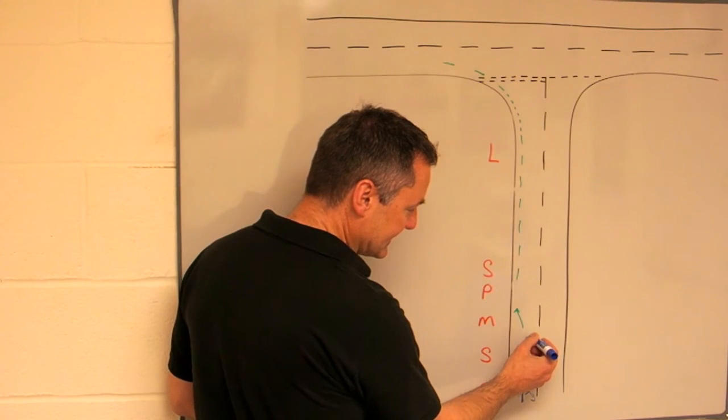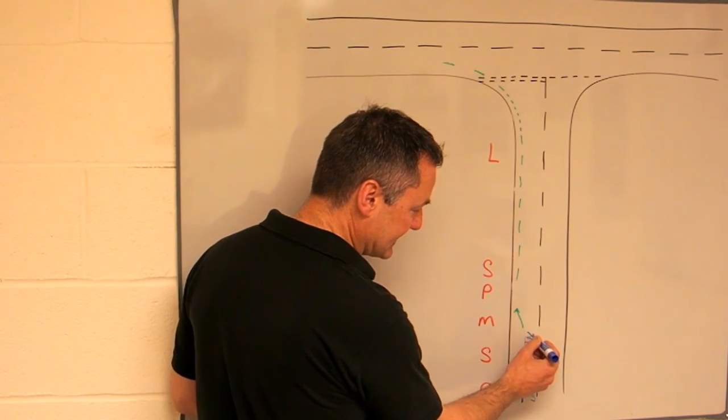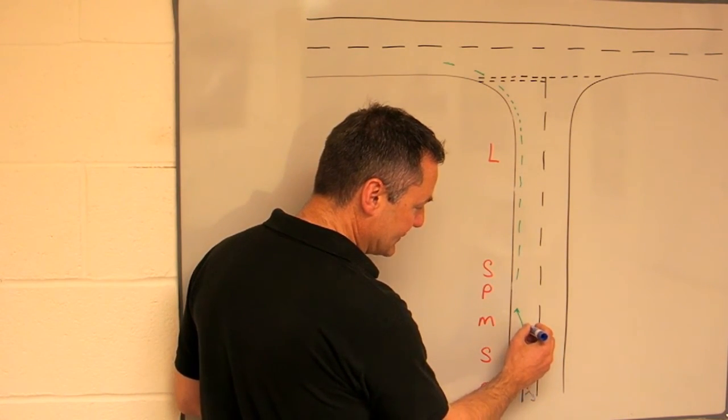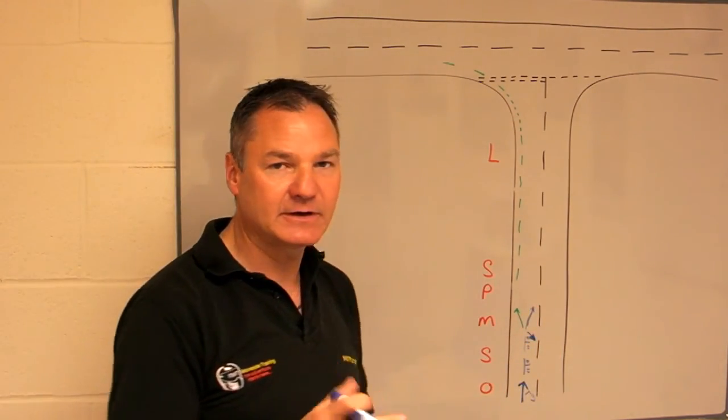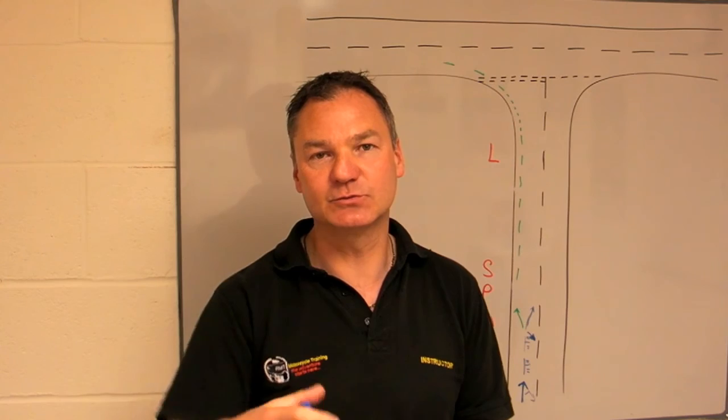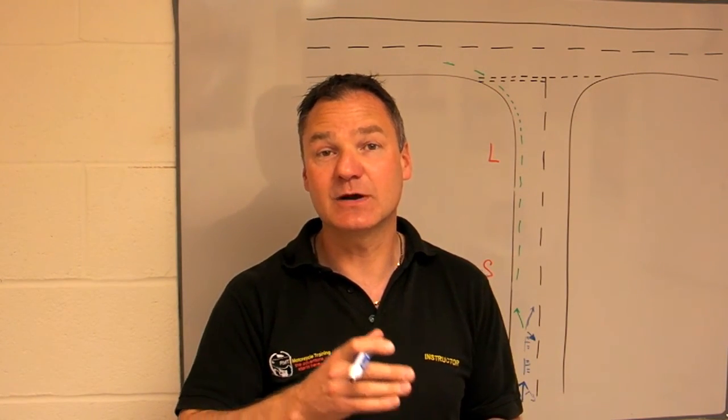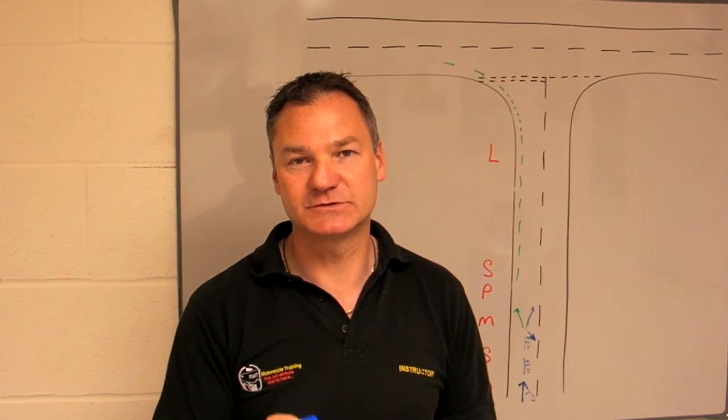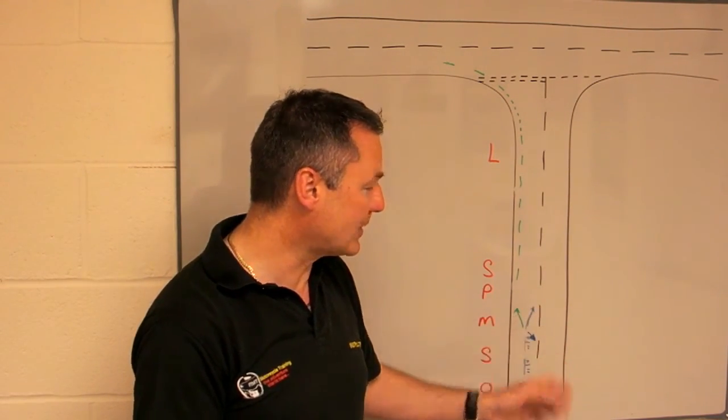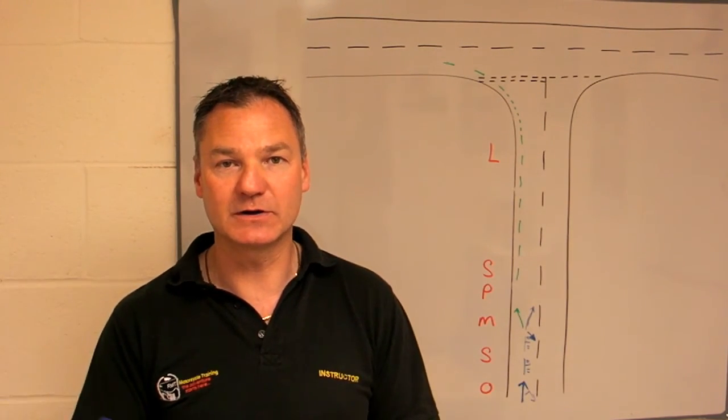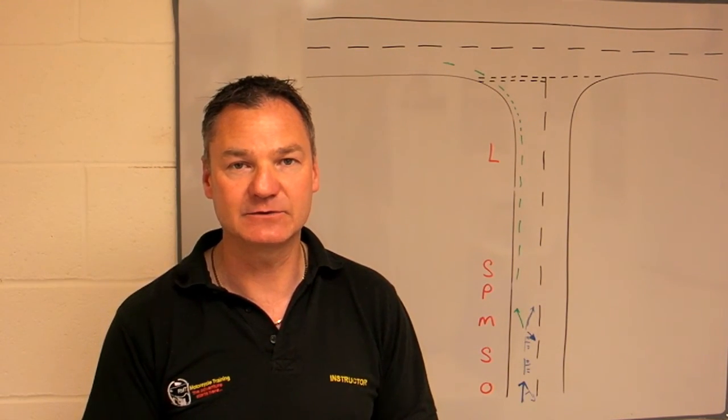So in this position here, we would carry out a lifesaver and then we'd maneuver over into position. Now the maneuver is going to be far enough over towards the white line to allow people to know that you are turning right. What you don't want to do though is move that far over that any part of your bike or body is crossing the white line as you approach the end of the road.